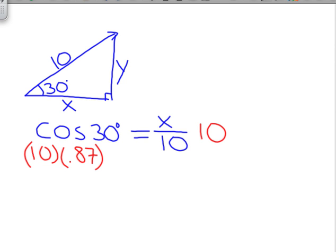And what you do to one side, you have to do to the other side. The 10s cancel. And now we have that 10 times 0.87 equals x, and therefore x equals 8.7.